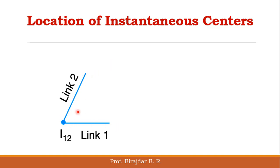This is link one and link two, which we are joining with the help of a pin joint. When we join two links with a pin joint, the instantaneous center lies at that particular point. We denote the instantaneous center by the letter I. Since it is formed from link one and link two, we write it as instantaneous center one two. We always write the naming in increasing order — one two, not two one.